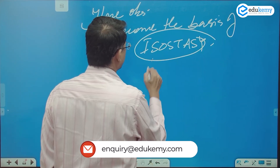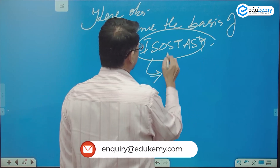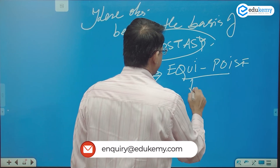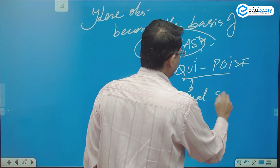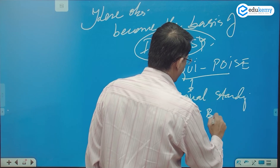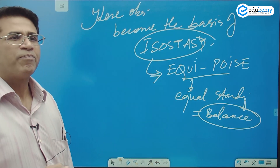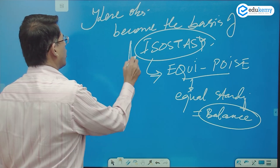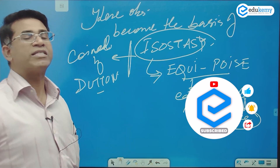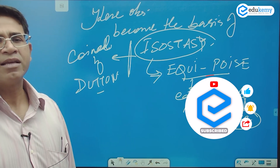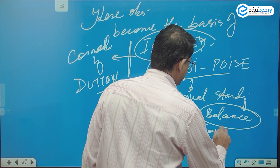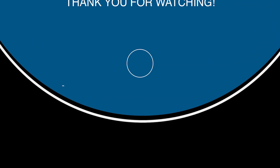The word isostasy comes from the word 'equipoise,' which means equal standing. This phrase was coined by Dutton and basically implies some kind of balance or equilibrium.